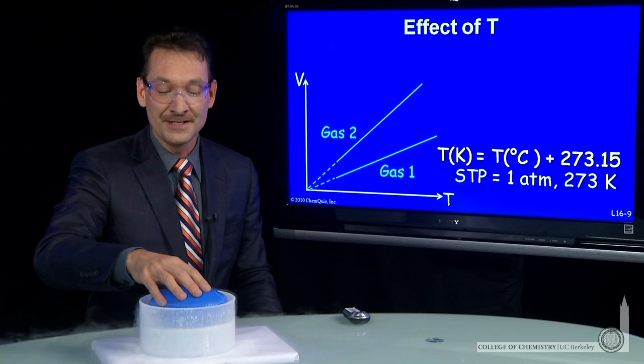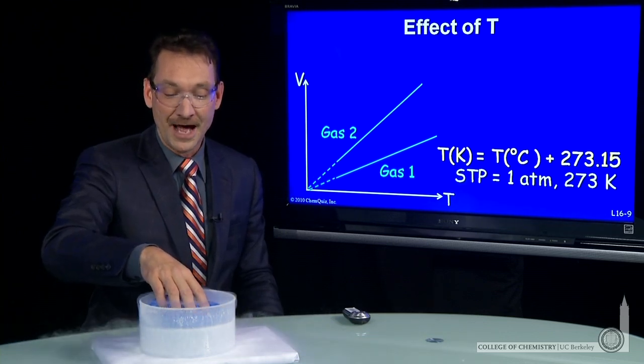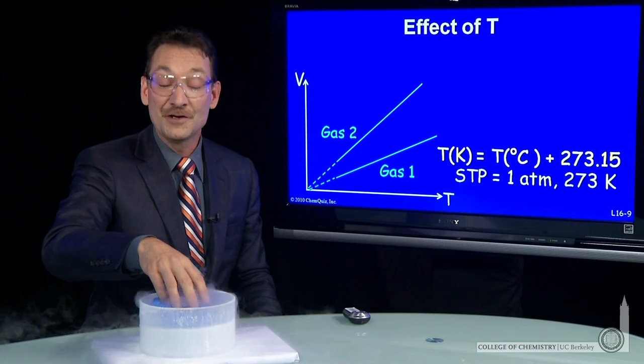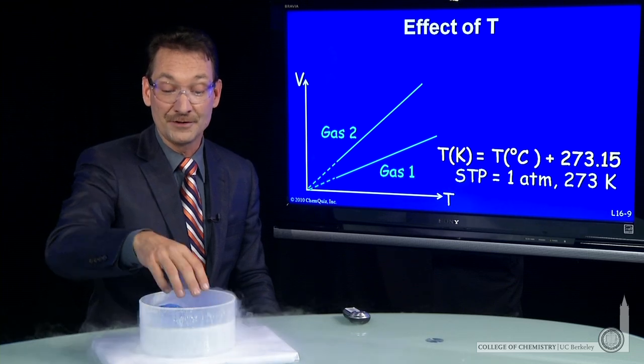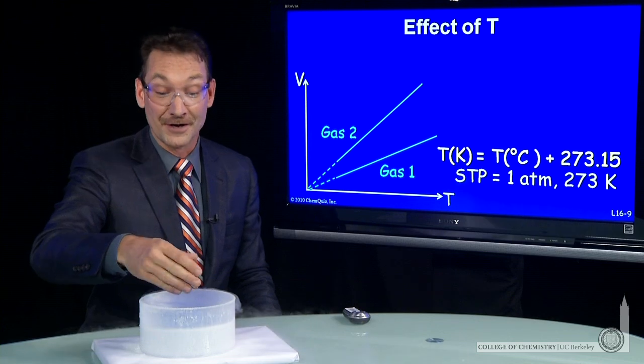As the temperature decreases, the volume decreases in a corresponding linear fashion. I'm going to go down to very near within 70 degrees of that absolute zero temperature. That's where this liquid nitrogen is. The volume of the balloon has gone very, very low.